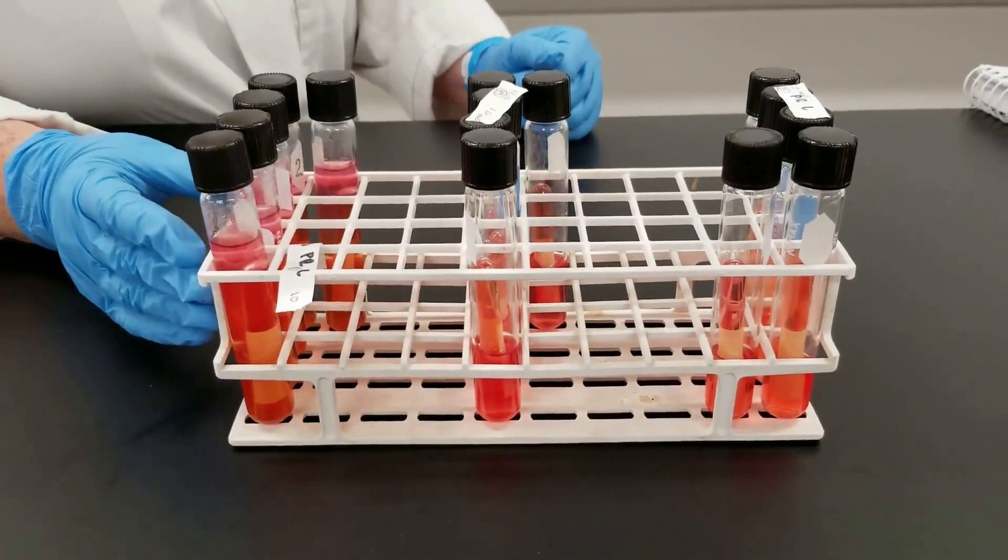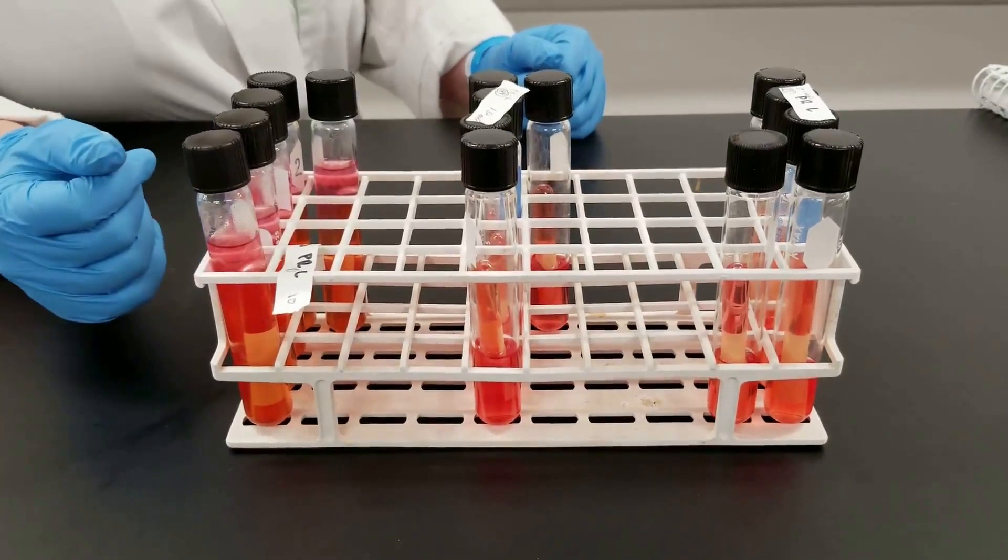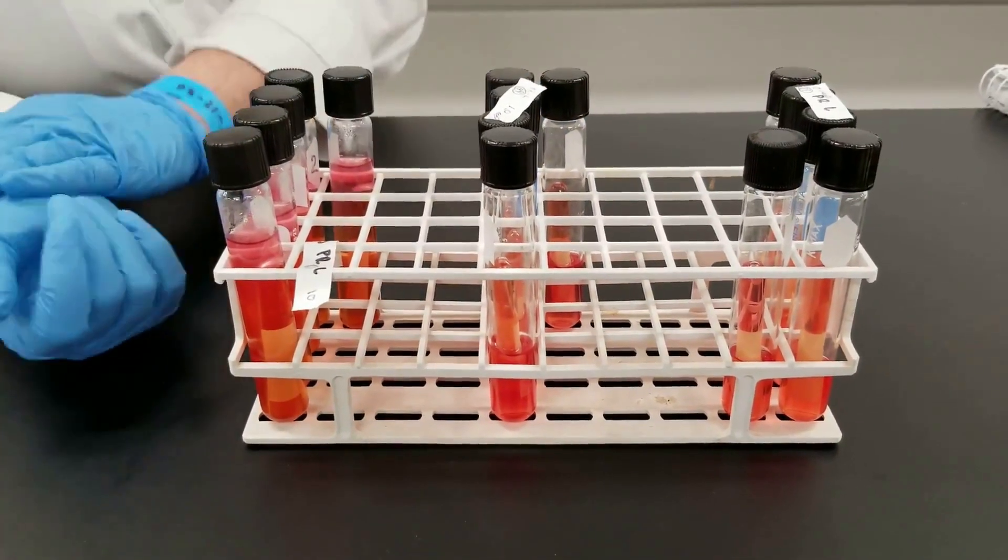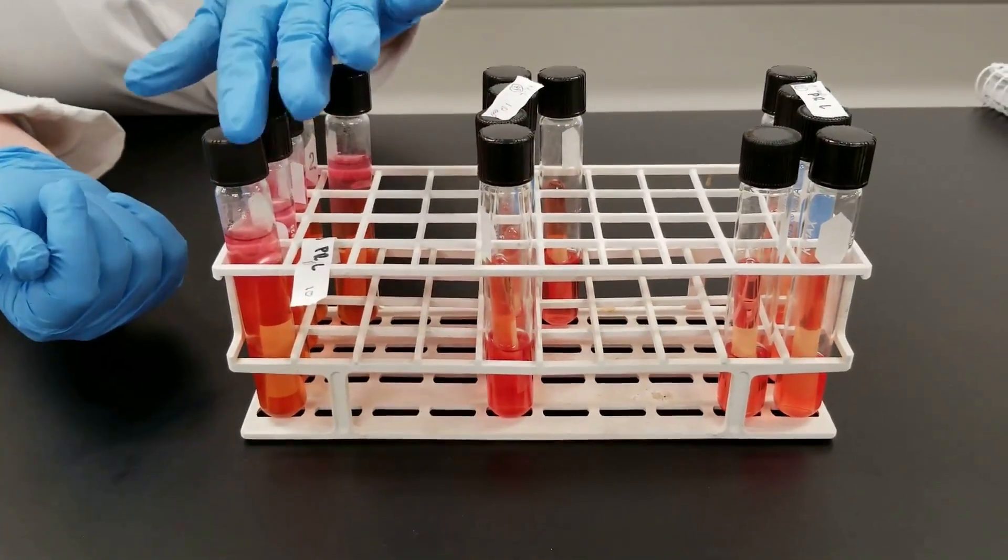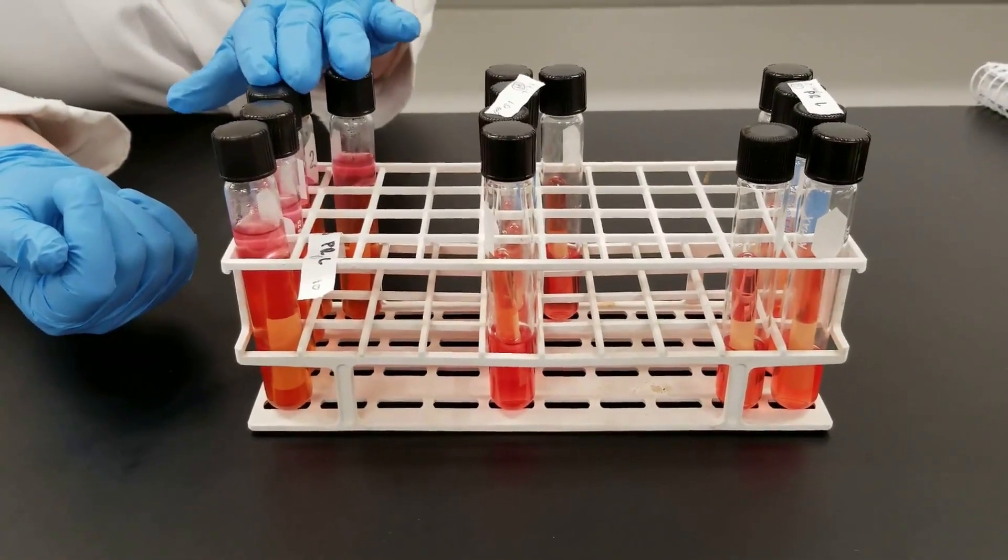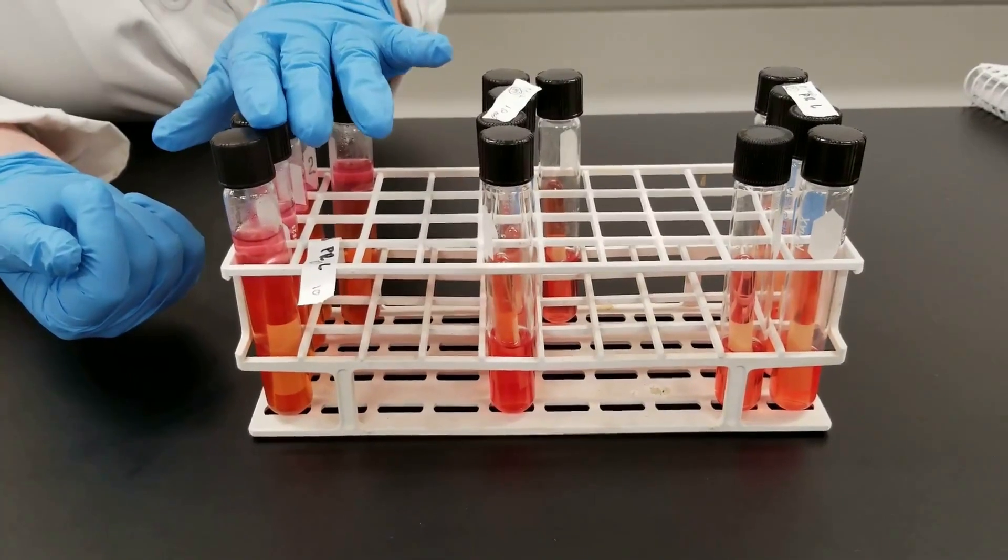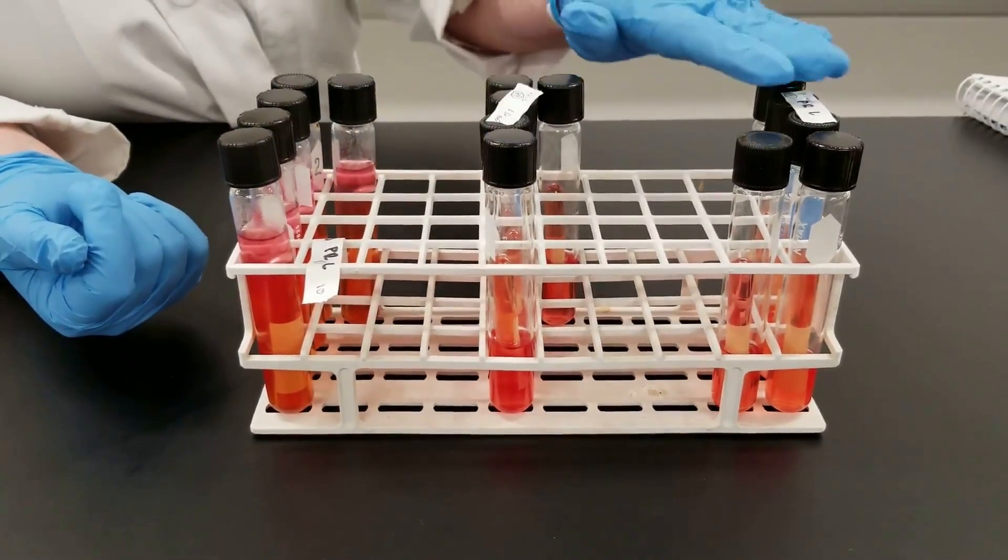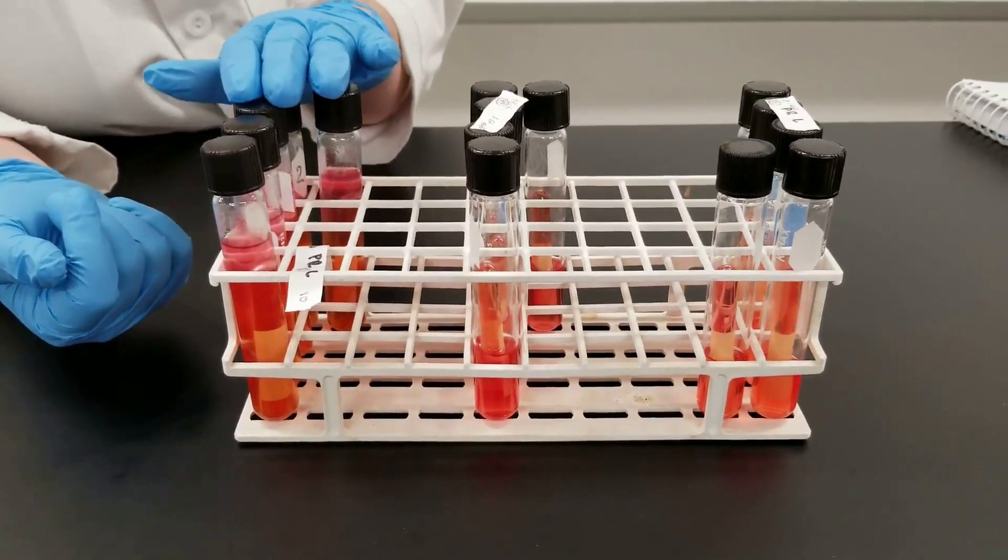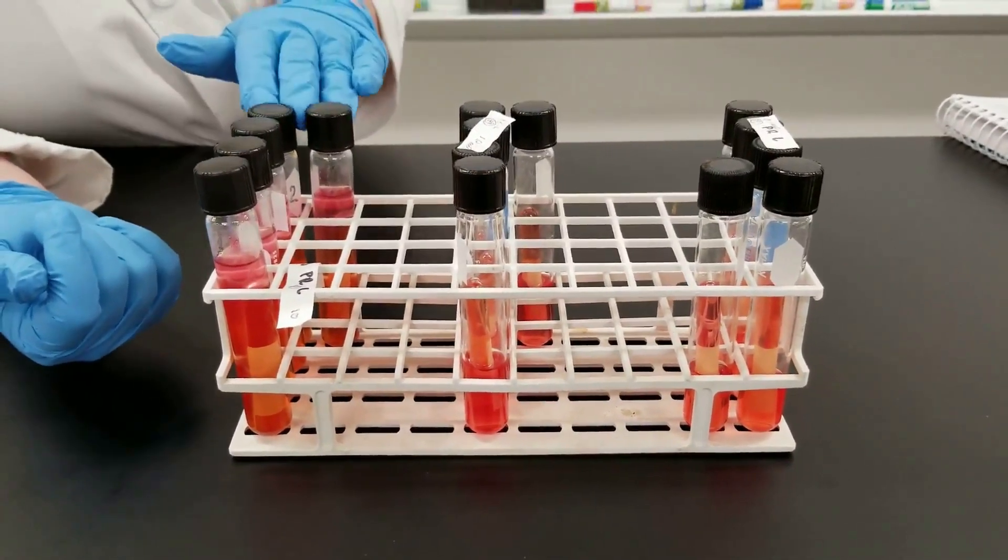So, if some of these had turned yellow, what you would do the way you would normally analyze it is you would count the number of positives, the number of yellow tubes, so the acid production, in each one of these sets. And so you have to record the numbers separately. You don't add them all together.